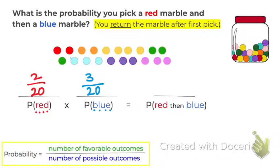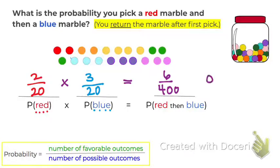Now to find the probability of both of these events happening, we just multiply these fractions. Multiply across: 2 times 3 is 6, and 20 times 20 is 400. You can change this to a decimal by dividing — 6 divided by 400 is 0.015. We can change it to a percent, which is 1.5%.